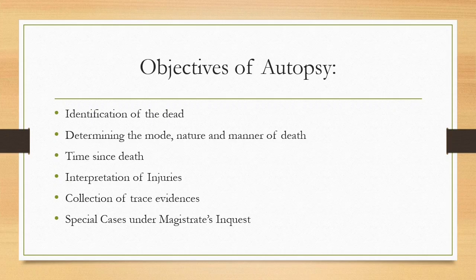The objectives of the autopsy are as follows. First is identification of the dead — we need to identify whose body it is, especially in the case of a missing person or an unclaimed body. Second is determining the mode, nature, and manner of death — that is, what was the cause of death and whether it was natural or unnatural. Third is time since death — how long ago the death occurred. Fourth is interpretation of injuries — what injuries may have possibly caused the death, whether it was a firearm injury, blunt force trauma, or sharp force trauma.